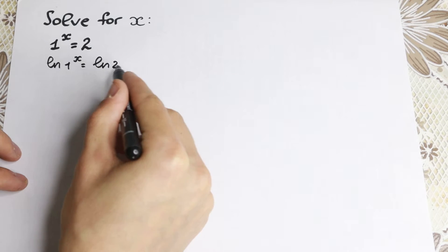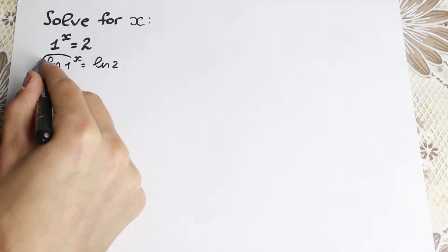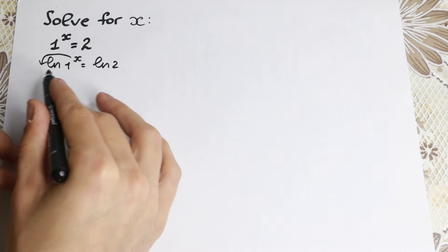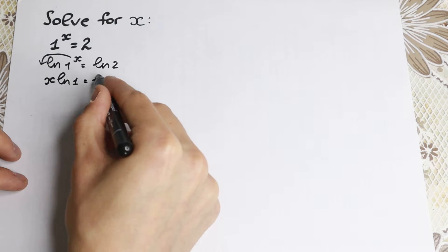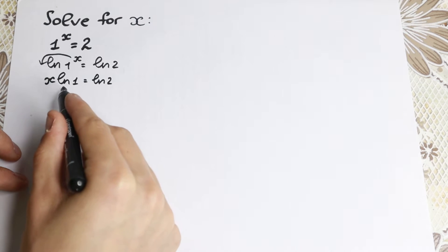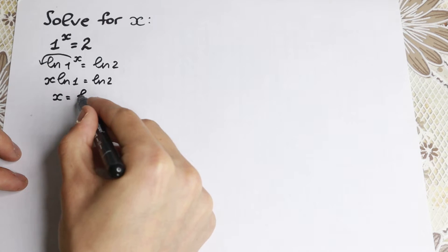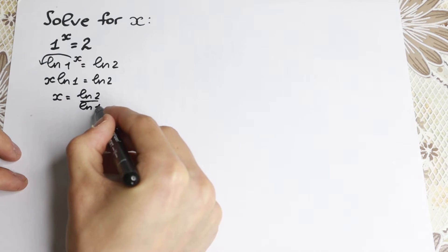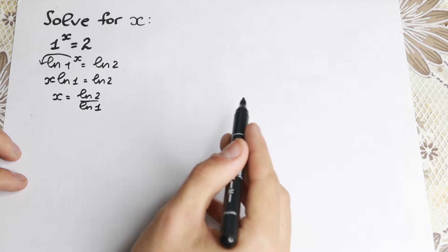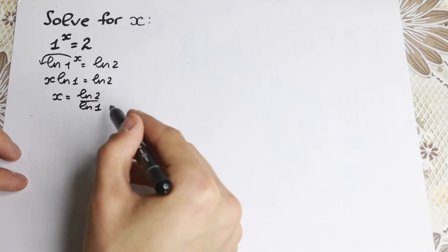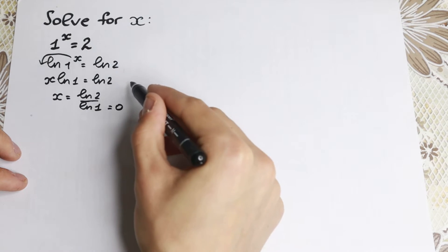This is our beginning. So we have 1 to the x equal to natural log 2. We know that our power comes down, so we get x times natural log 1 equals natural log 2. From here we divide both sides by natural log 1, giving x equals natural log 2 over natural log 1. But natural log 1 equals 0, and we cannot divide by 0.